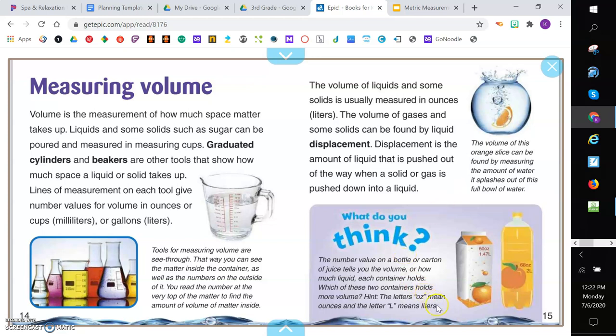What do you think? The number value on a bottle or carton of juice tells you the volume, or how much liquid each container holds. Which of these two containers holds more volume? Hint, the letters OZ means ounces, and the letter L means liters. Which one of these two do you think holds more? If you said the two liter bottle, the 68 ounces, you are correct.